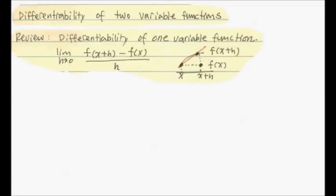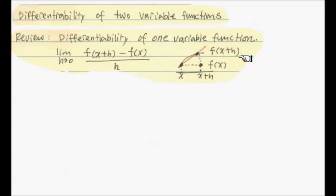The first part is reviewing the differentiability of one-variable functions. It is about the existence of this limit, which is motivated by computing the instantaneous rate of change of the value of f. In the xy-plane it is usually represented like this, where h represents increment of x values — h can be negative — and the increment of y value is taken in this order. The slope of this line represents the limit behavior, and if that limit exists, we say it's differentiable.